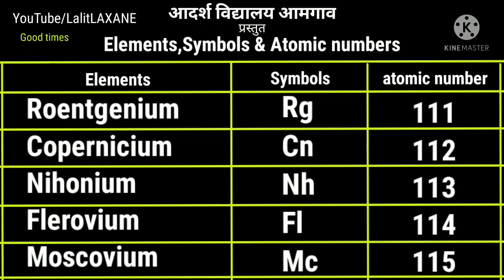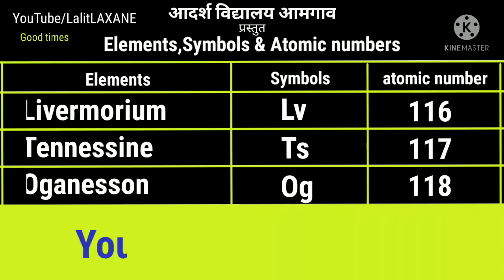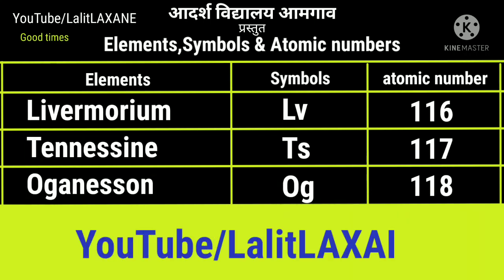Nihonium Nh, 113. Flerovium Fl, 114 and moscovium with atomic number 115 and symbol Mc. With atomic number 116, livermorium Lv and tennessine Ts with atomic number 117. The last element of the periodic table is oganesson with symbol Og and atomic number 118. That's all, thank you so much.